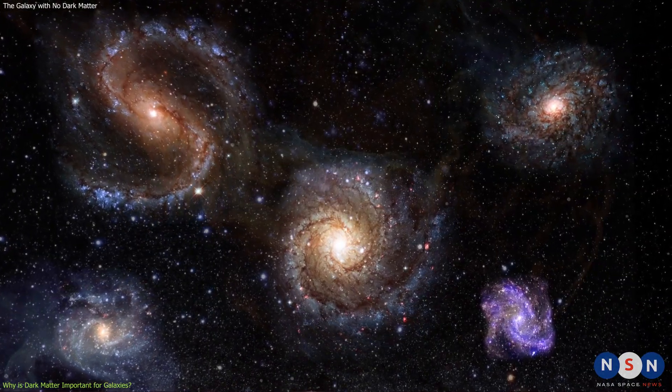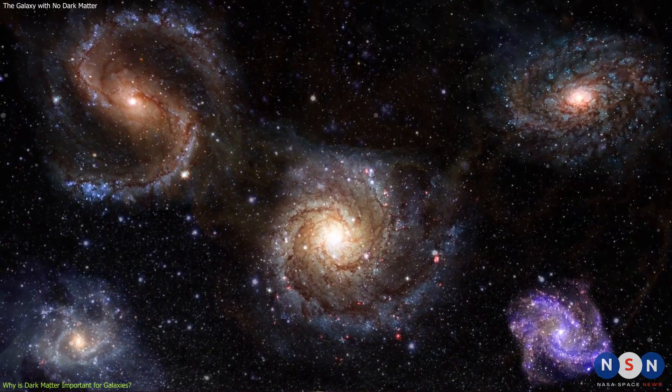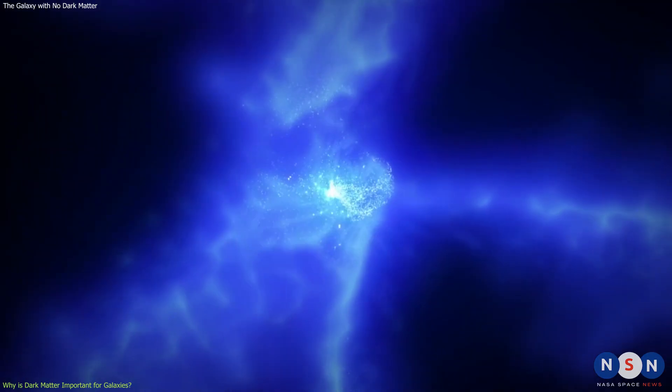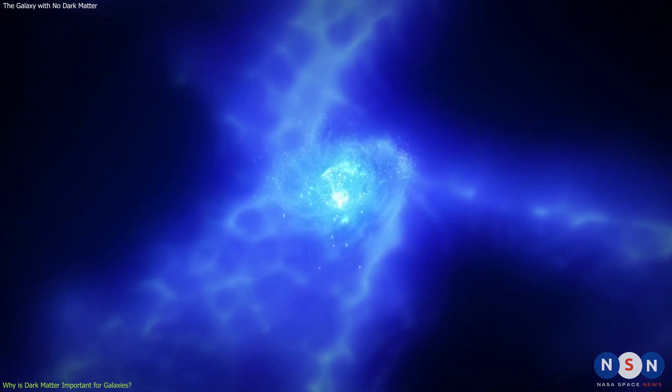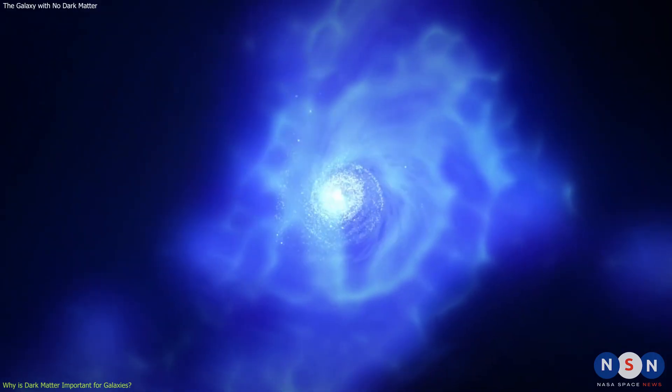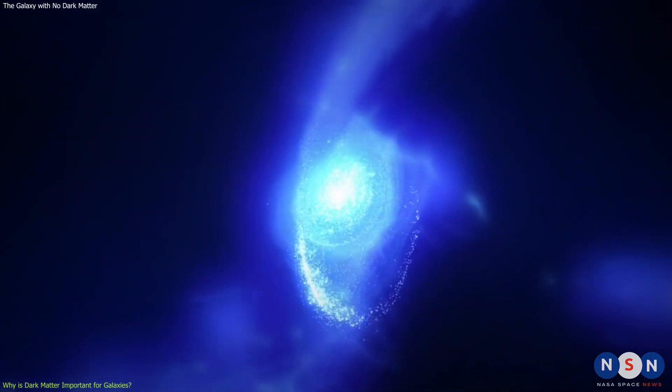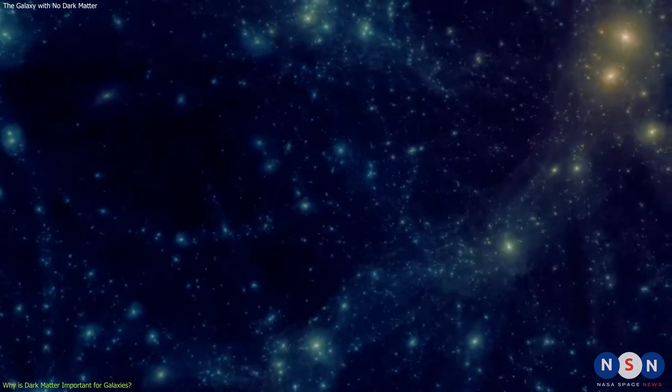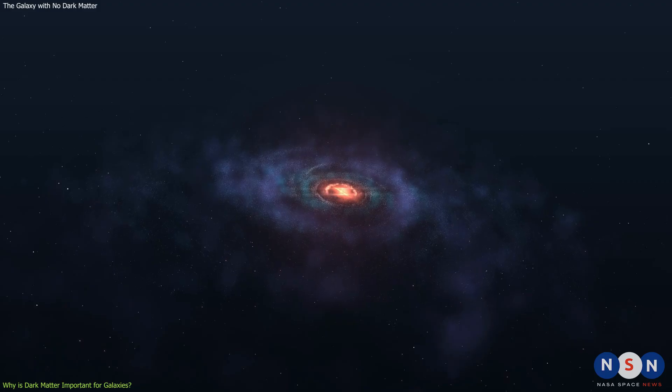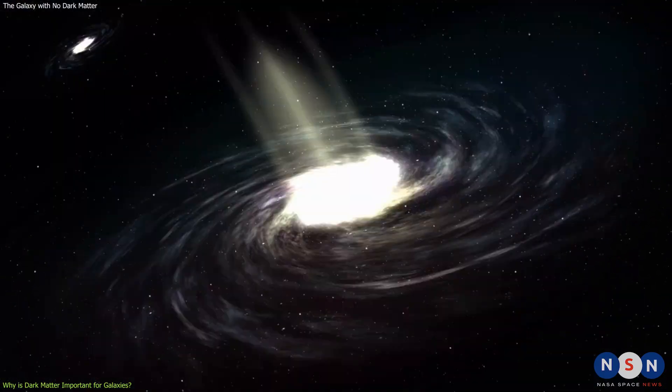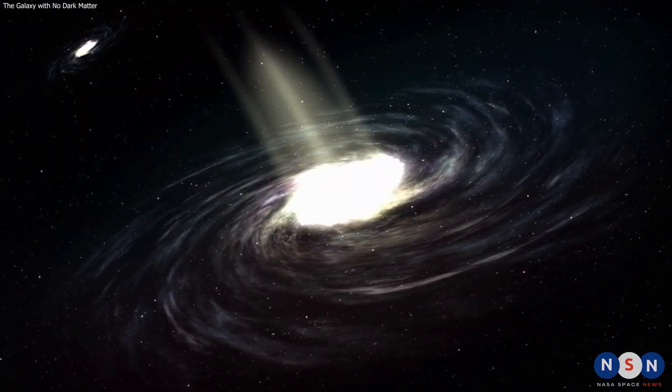Dark matter also affects how galaxies form and evolve over time. According to the current cosmological model, dark matter halos are the seeds for galaxy formation. They grow by merging with other halos and by accreting gas from the intergalactic medium. The gas then cools and condenses into stars and planets within the halos. The properties of dark matter halos, such as their mass, shape, density, and concentration, determine how galaxies look and behave. For example, more massive halos tend to host larger and more luminous galaxies, while less massive halos tend to host smaller and fainter galaxies.